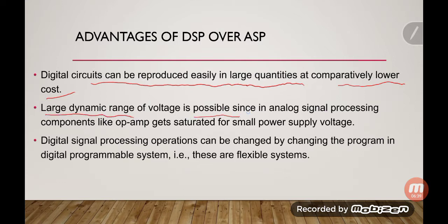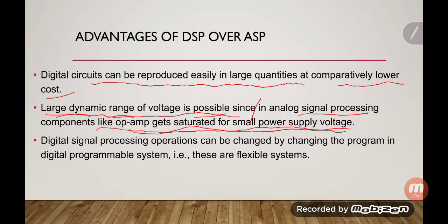Another advantage is that a large dynamic range of voltage is possible in DSP. In analog signal processing, components like op-amps get saturated for a small power supply — if the output exceeds the power supply voltage, the output will be saturated and there will be no amplification. So the dynamic range of voltage is limited in analog signal processing, while in DSP this is not the case.